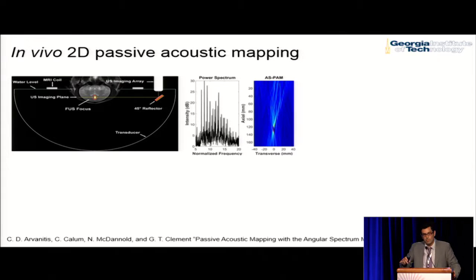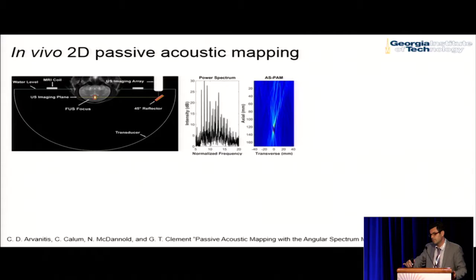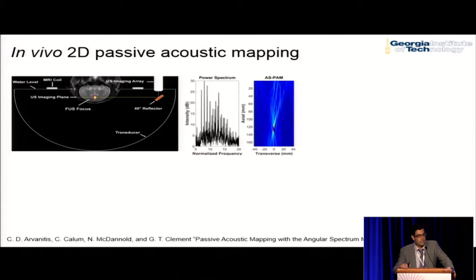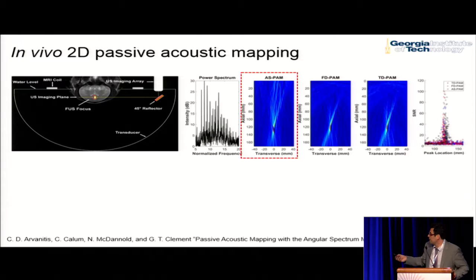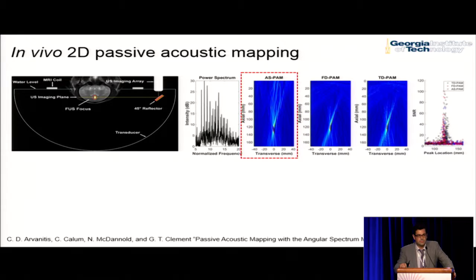We then wanted to validate our data using experimental sources. We used the clinical system from InSightec, incorporated an ultrasound imaging array, and were able to record the acoustic emissions during a typical blood-brain barrier experiment in non-human primates. We were able to localize the location of microbubble activity and essentially the target of the treatment.